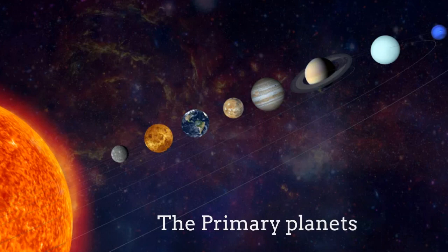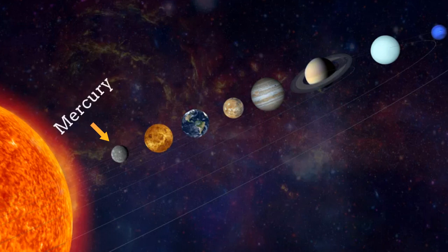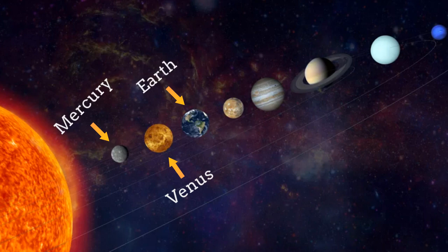Here are the primary planets. Now we will get to know about these planets. 1st planet is Mercury. Mercury is the closest planet to sun in the solar system. 2nd planet is Venus. Next is our planet Earth. So Earth is 3rd planet from the sun. Next planet is Mars. So Mars is the 4th planet from sun.